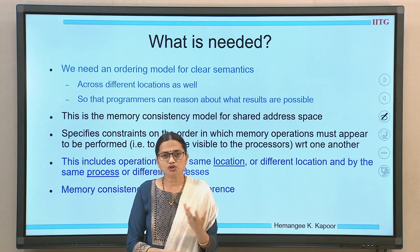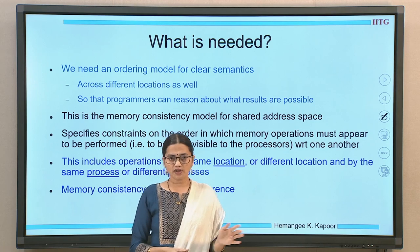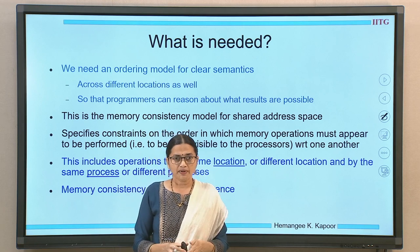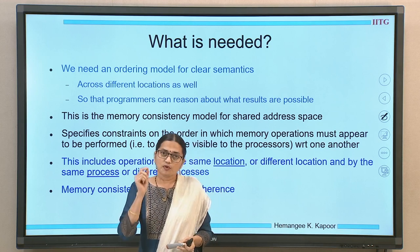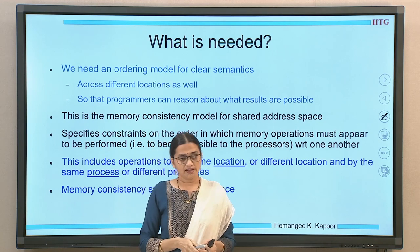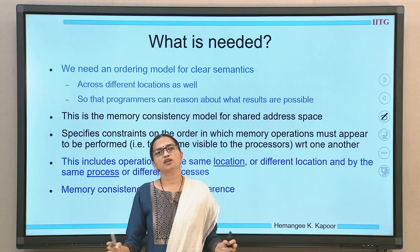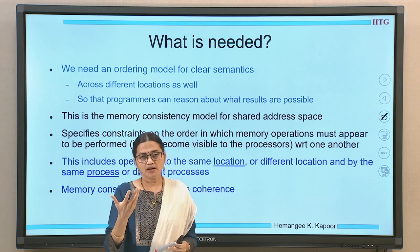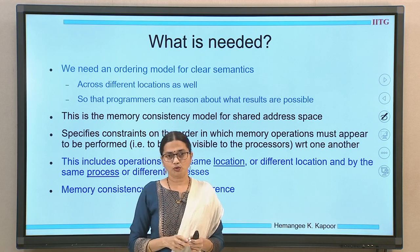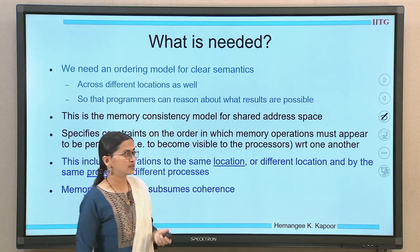This consistency model specifies the constraints on the order in which memory operations must appear to be performed — they may or may not actually be performed in that manner, but they appear to be performed in a particular manner. This ordering includes operations for the same location or different locations, by the same process or across different processes. Coherence was only about different processes operating on a single shared variable, whereas consistency talks about different processes and across different variables too. Memory consistency subsumes coherence.